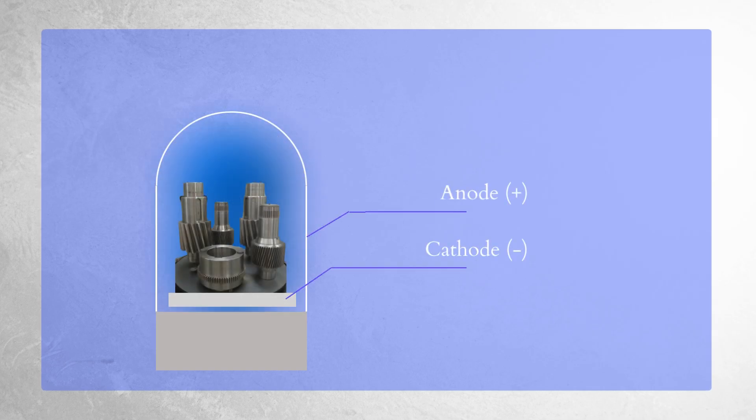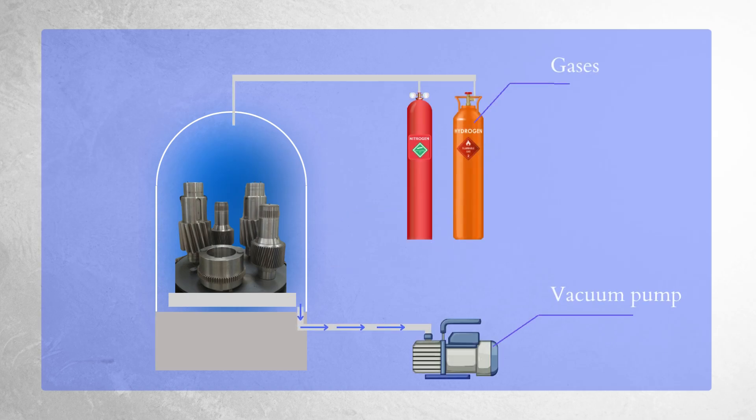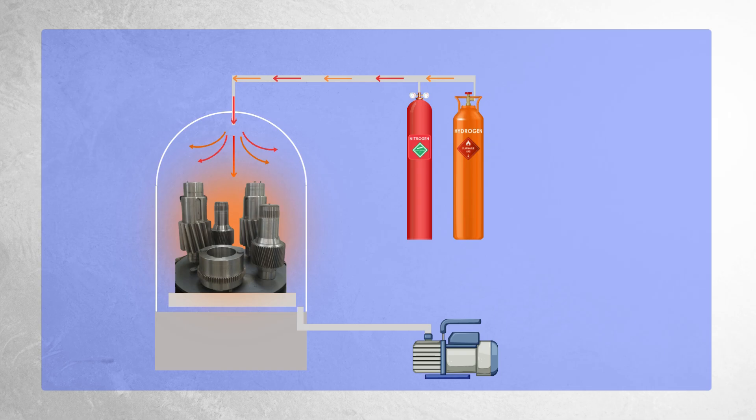After closing the chamber, a vacuum pump removes the air. To create the working atmosphere, different percentages of hydrogen and nitrogen gases are introduced into the chamber.